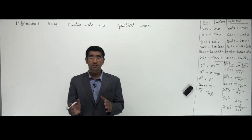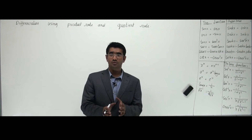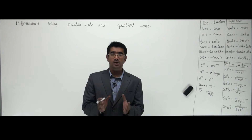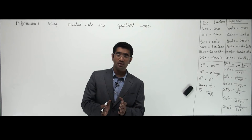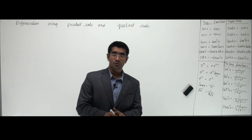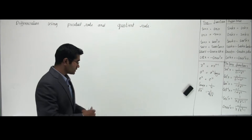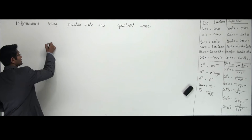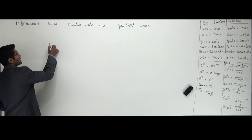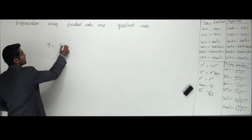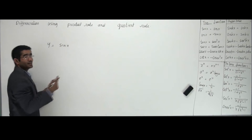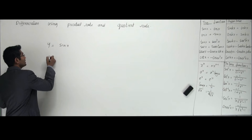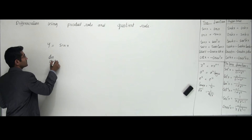Now let's move from a simple form of differentiation to a more complicated one — using the product and quotient rule. We saw that if we get a function like y = sin x, it's easy to differentiate: dy/dx = cos x.